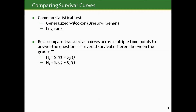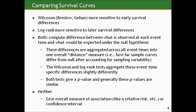Just like any other hypothesis test we've done, there's a null and alternative hypothesis. The null is that the true underlying curves in the two groups being compared are equivalent; the alternative is that they're not. The Wilcoxon test is more sensitive to early differences in the follow-up period — if the curves diverge earlier rather than later, Wilcoxon will be more in tune to that. The log-rank is more sensitive to later survival differences.